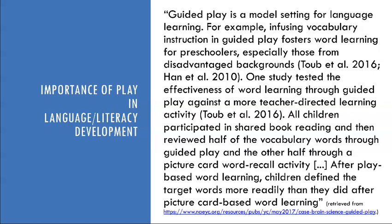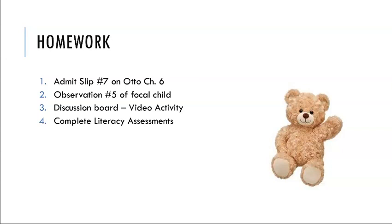That is it for this week. The homework is to complete admin slip number seven, which is based on Otto's chapter six — the reading for this week — then observation number five of your focal child, and complete the discussion board activity in which you identify the reading stage of the child in the video. And if you haven't done so already, complete your literacy assessments so that you have that ready for your upcoming language and literacy profile assignment, which is due in a couple of weeks. I will talk to you again next week — bye!